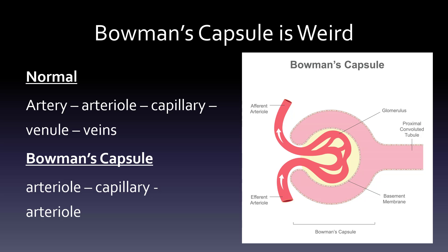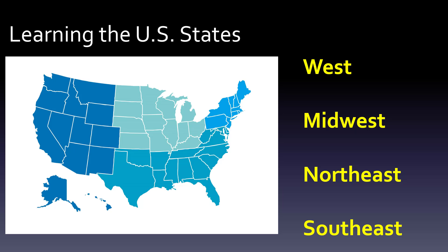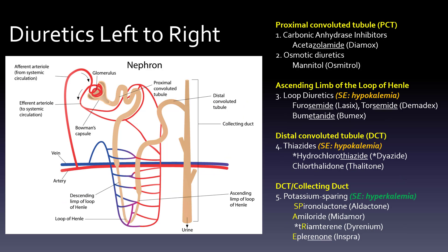Because that pressure is so high at one part, the pressure at the end of that hose is much lower. If you're in the United States, you generally learn the country in four regions: the West, the Midwest, the Southeast, and the Northeast. We're going to do the same thing here, because those regions correspond to different parts of the nephron.